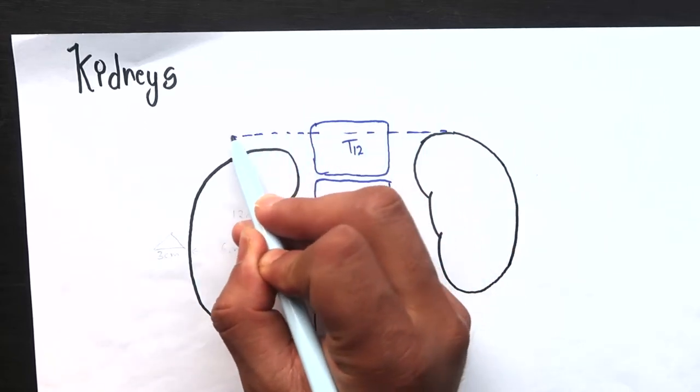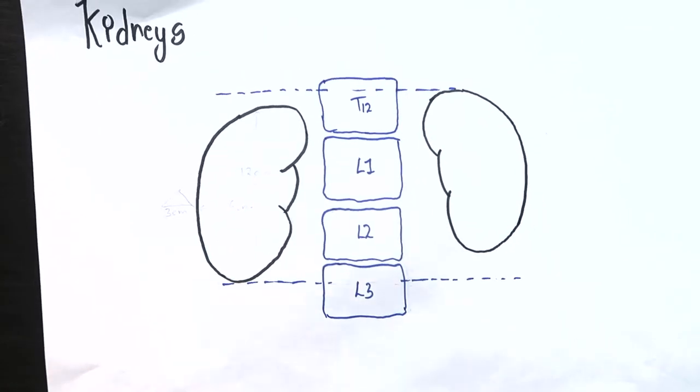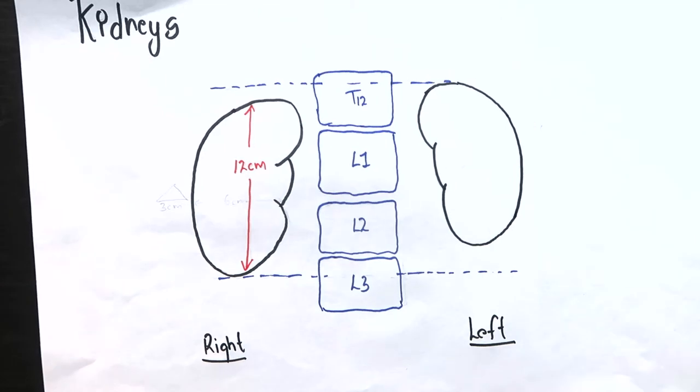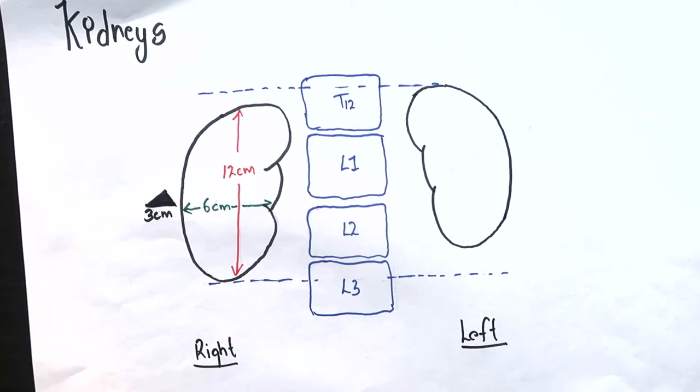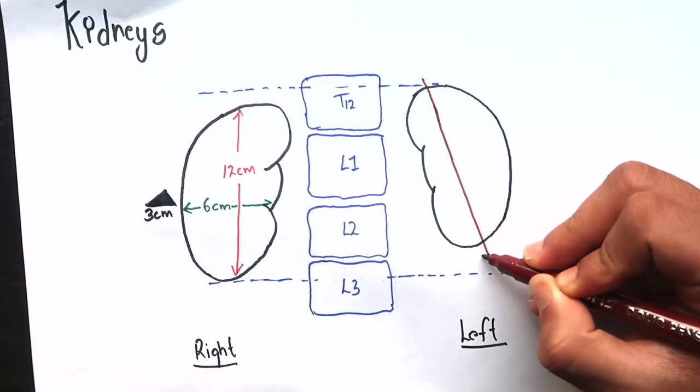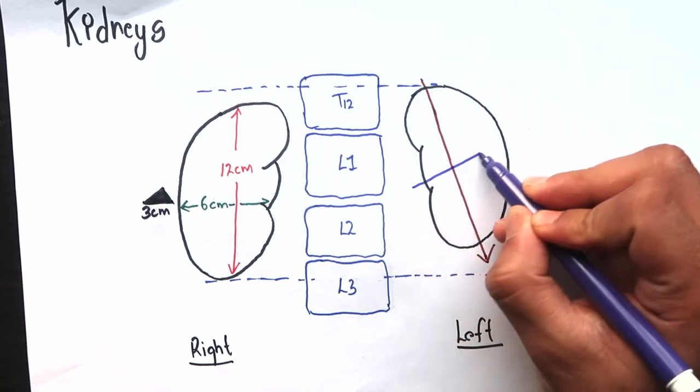Vertically, they extend from 12th thoracic vertebra to the center of the body of 3rd lumbar vertebra. Each kidney is about 12 cm long, 6 cm broad and 3 cm thick. The long axis of kidney is directed downwards and laterally. The transverse axis is directed laterally and backwards.